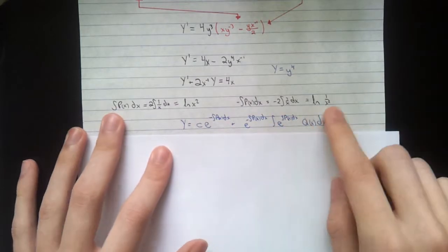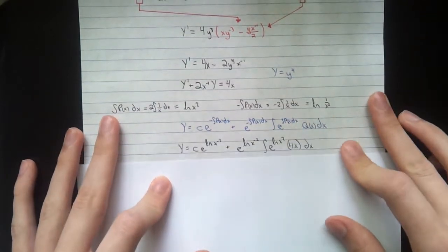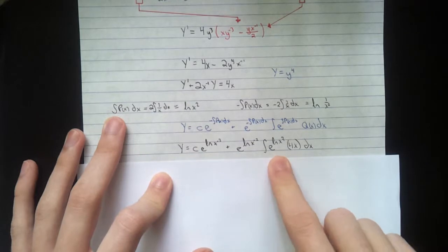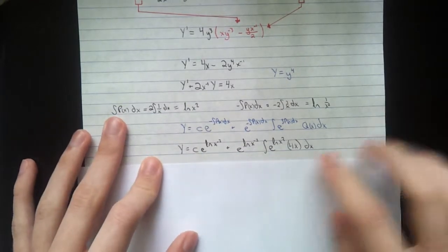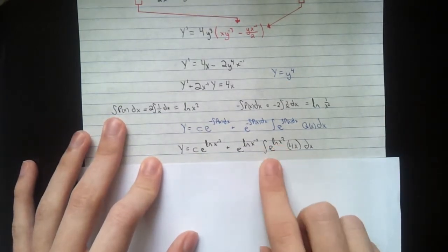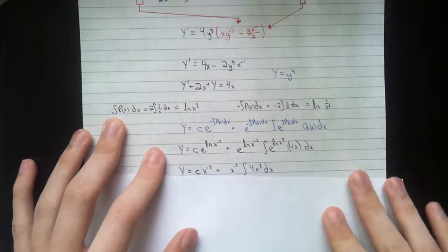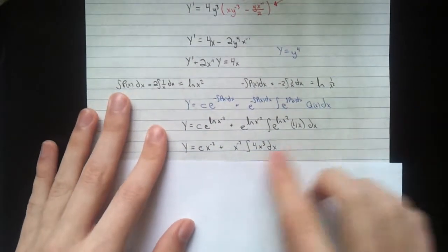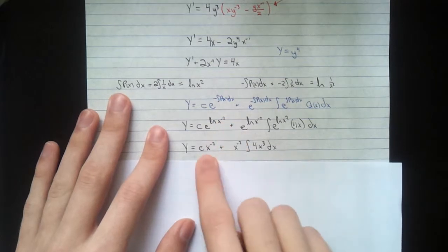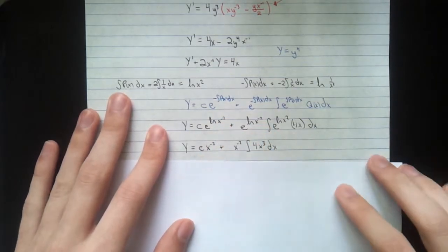So we've already computed our integrals. We just plug it in. Now we have one more integral to compute here. You get, of course, e to the natural log x squared. That's just x squared. That's 4x cubed. Same thing here. e to the natural log of x to the negative 2. x to the negative 2. Same deal there.